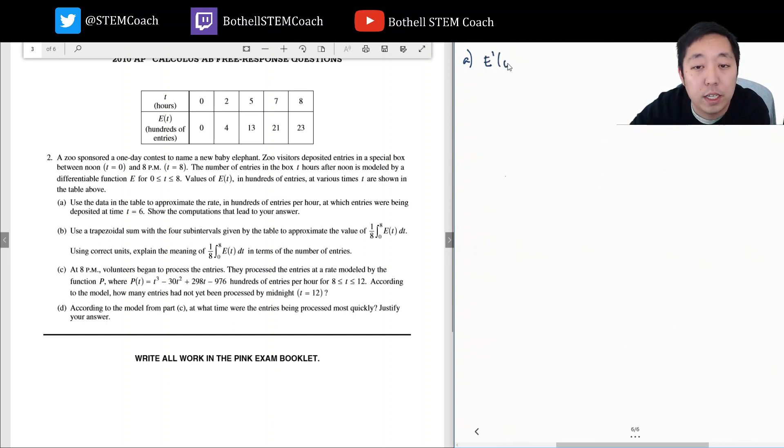I'm gonna use the secant line slope between here. I'm gonna say e prime of six, the derivative, is about equal to e of seven, which would be the secant line slope, minus e of five over seven minus five. It's always gonna be like that. You got to find the point and surround it. So you got to do the points around because six is between five and seven here for t. So that's twenty-one minus thirteen divided by two. And so that's eight over two and that's four. And this is hundreds of entries per hour.